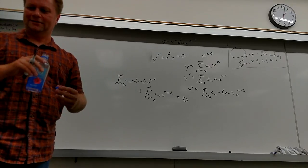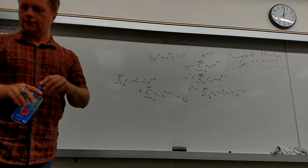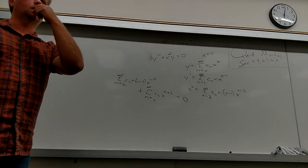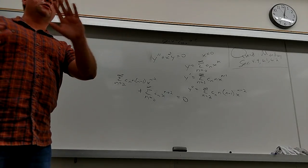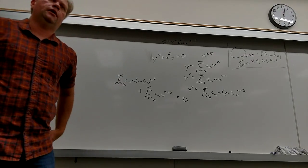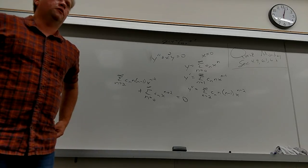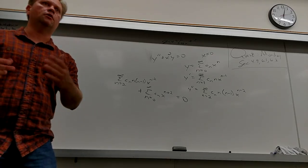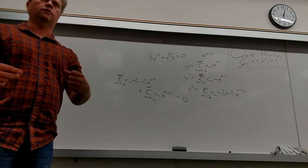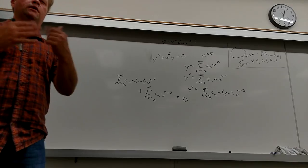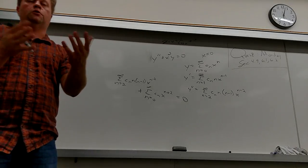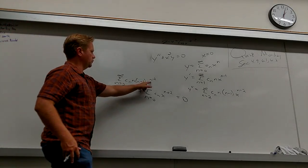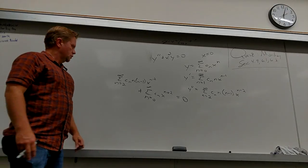You can use the textbook's k substitution if you want to, but I personally don't need it. All we're doing is shifting — we're not changing anything truly. We're saying I want to start at a different point. So I'll just replace all the n's with n plus 2 in the first sum. If I make all these two bigger, I better make the first value two less, so it starts at n equals 0.